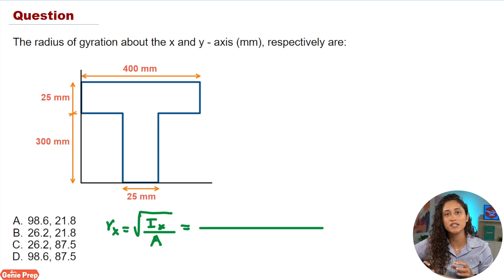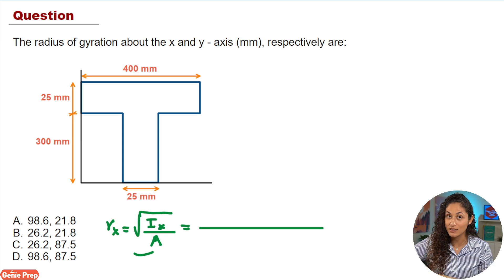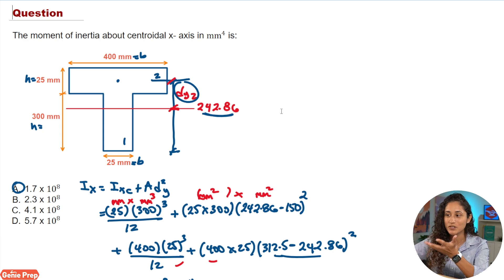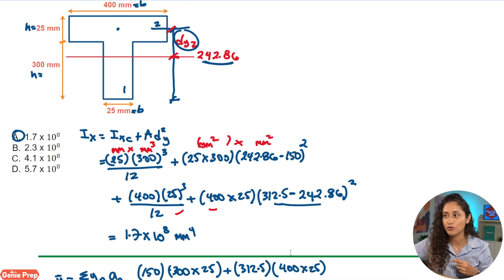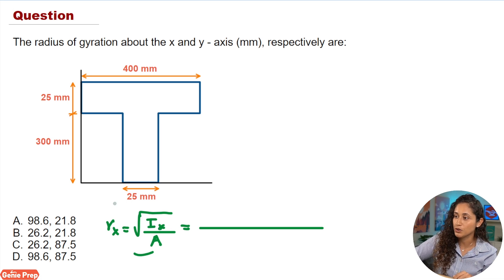Now let's find the radius of gyration about the x-axis using rx equals the square root of Ix over the total area. Ix is the moment of inertia about the centroidal x-axis. From our previous problem we already solved for this, so we'll just grab that answer: Ix equals 1.7 times 10 to the power of 8.